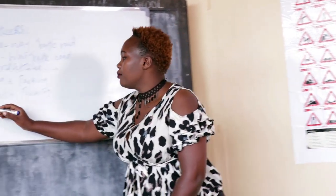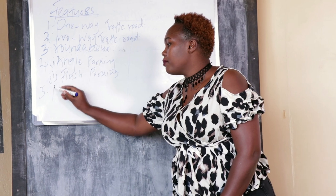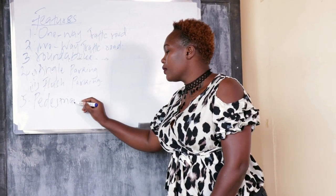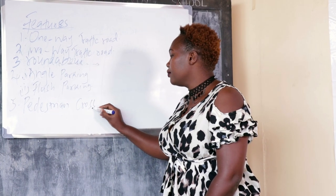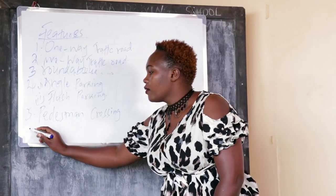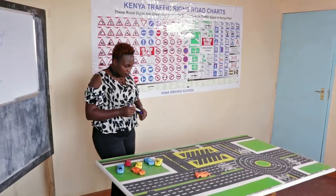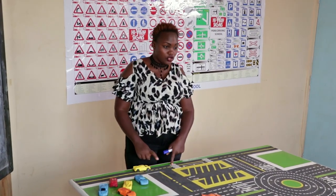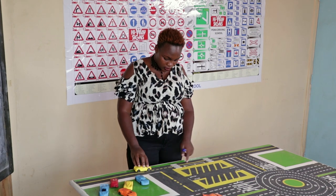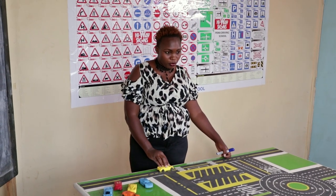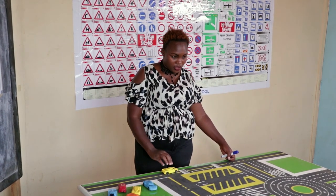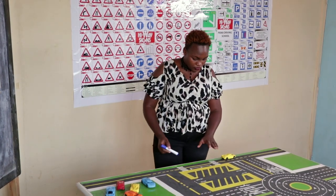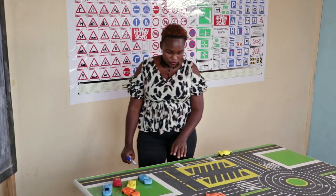We have another feature in this table — that is the pedestrian crossing. Whenever you find a pedestrian crossing like this one on a two-way traffic road, you must stop and give way to the pedestrians.